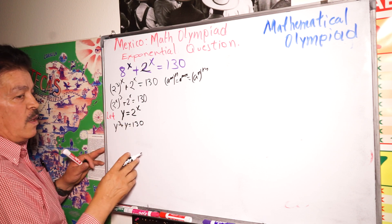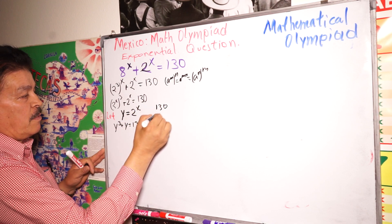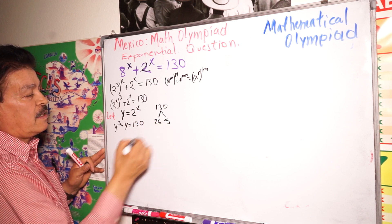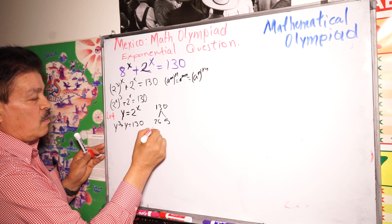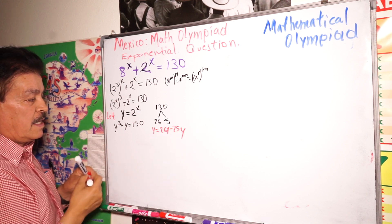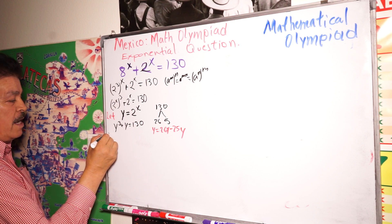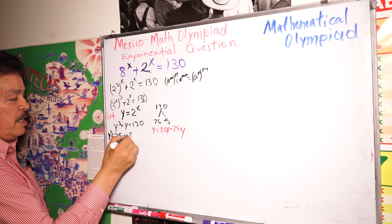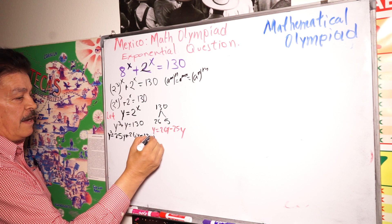We have 130, and we're able to divide it into two factors: 26 and 5. So we can write Y as 26Y minus 25Y. Then we can rewrite the equation as Y to the third power minus 25Y, plus 26Y minus 130.